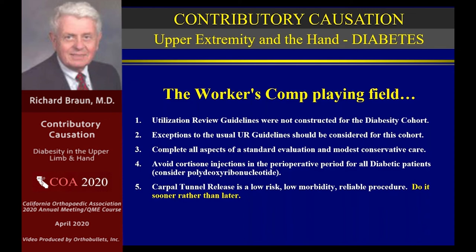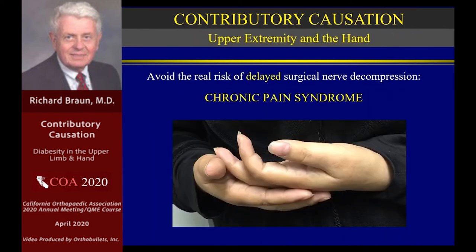Number five: carpal tunnel syndrome surgery is a low-risk, low-morbidity, reliable procedure — do it sooner rather than later. Why? Because we're trying to avoid the chronic pain syndrome patient. If you allow pain to go on for a long period of time, the disability and apportionment issues become such a problem that we've created something we really can't control very well. Avoid the real risk of delayed surgical nerve decompression — chronic pain syndrome cannot be fought with the ability and reliability of standard operations performed on standard people.